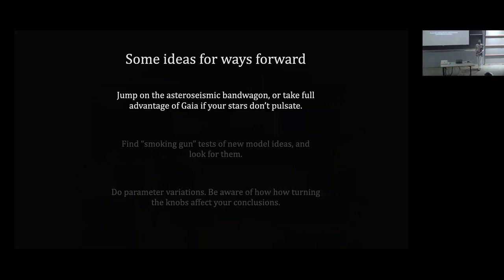My first recommendation: jump on the asteroseismic bandwagon. You can see in the history of solar studies how revolutionary helioseismology was — it completely changed the game and caused updates to opacity tables when helioseismic observations disagreed with the opacities being used. We can now do this for other stars. As a community, I would argue we should try to get pulsation spectra on literally every star we possibly can, because this is an incredibly powerful window into the interior — better than almost any other observation for probing what's going on in 1D models.